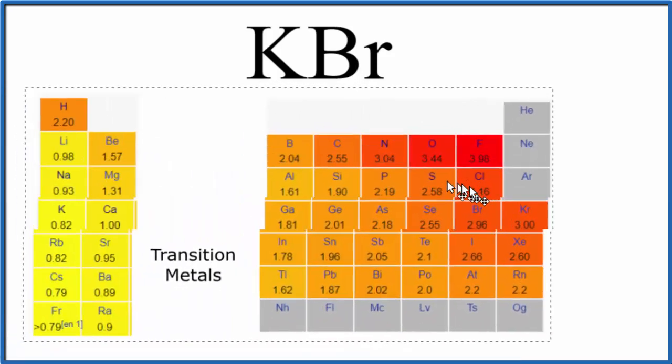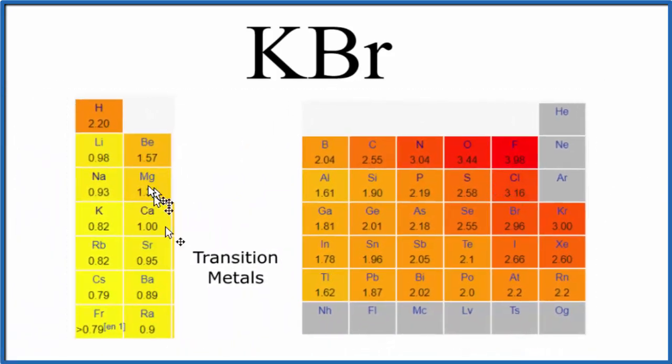So here's an abbreviated periodic table. We don't have the transition metals. We find potassium again here in group one. That's 0.82. That's its electronegativity value. Bromine, 2.96.